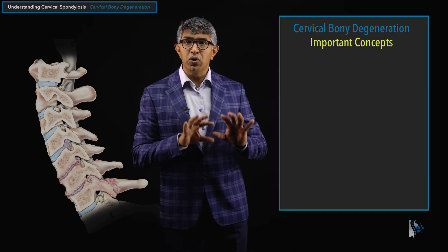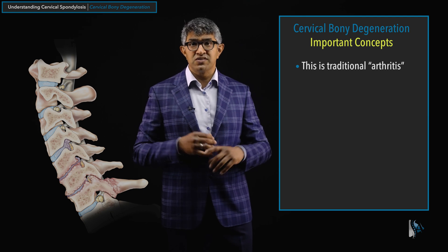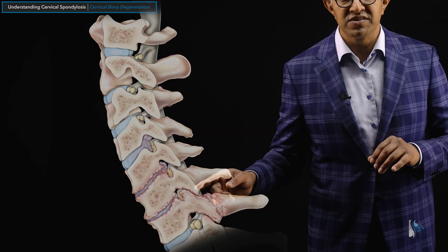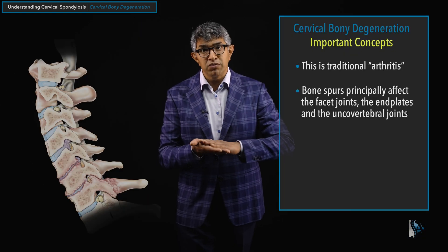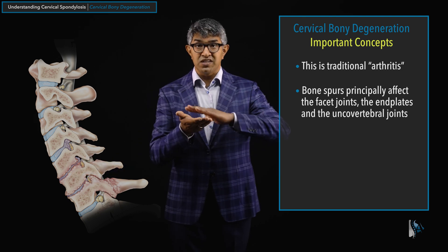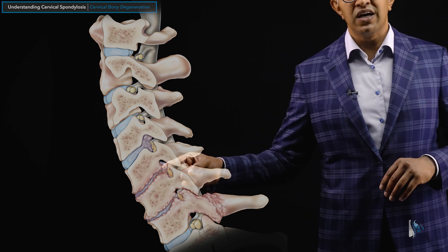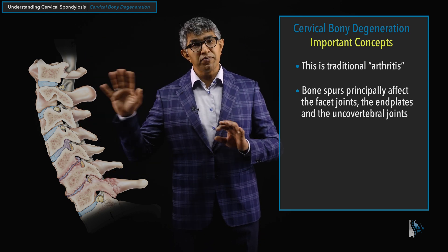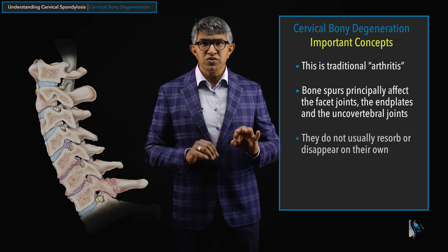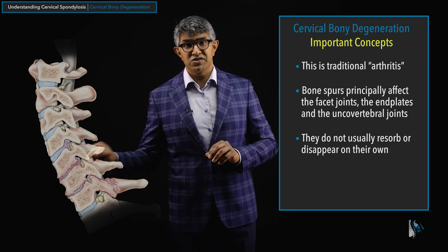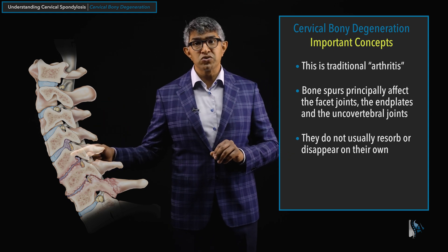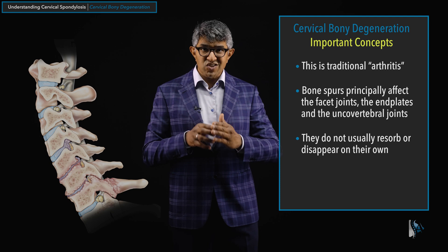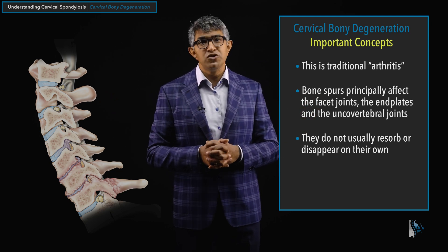The important concepts to take away from bony degeneration in spondylosis: this is traditional arthritis involving joints and pseudo joints where bones rub together. Bone spurs principally affect the facet joints, they can affect the end plates — the surface of the vertebral body where the disc sits, think of it as the top of a tuna can — and they affect the uncovertebral joints. Those are the typical places arthritis occurs from C2 down. Higher up, there can be different types of arthritis because the anatomy looks different at the top of the neck. Just like disc degeneration, these structures do not disappear over time — they typically do not resorb. Sometimes after surgery with fusion a level may remodel, but in the absence of that, bone spurs will stay. They are one-way things that slowly get worse.